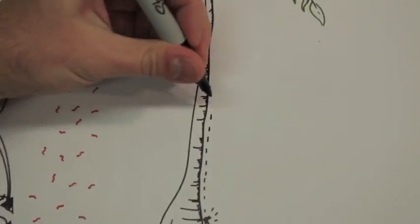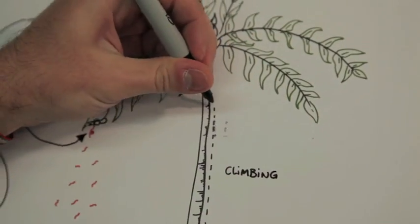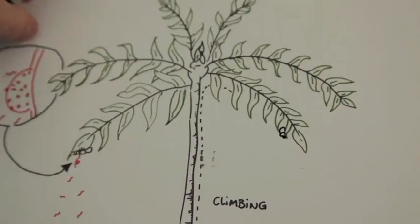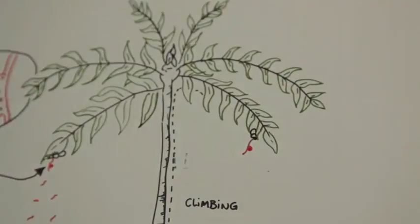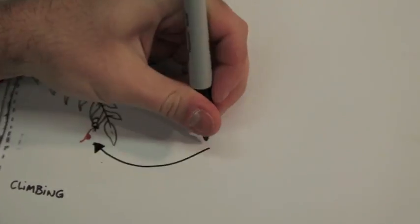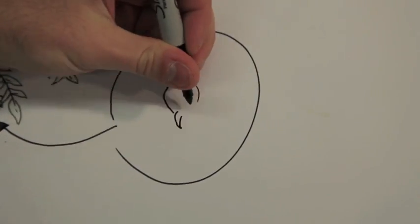And then after about a week the ant comes back out and now it's controlled by the fungus. It climbs up and it goes to a very special location to the underside of a leaf. And again the fungus grows out of the back of the head just like in the movie from the BBC you saw.